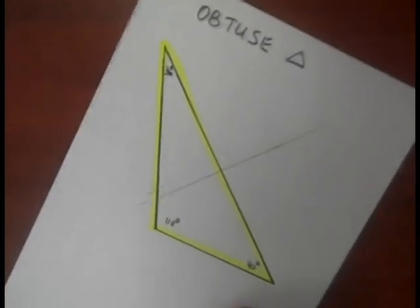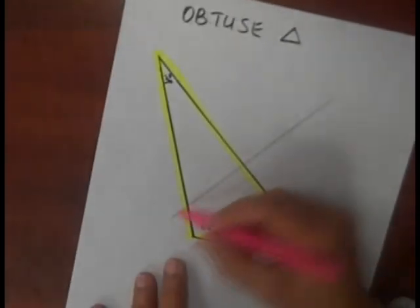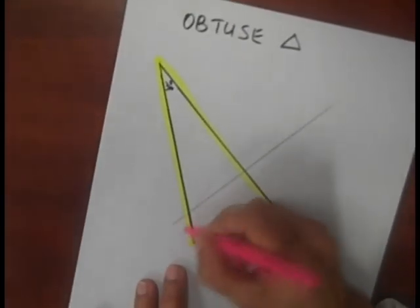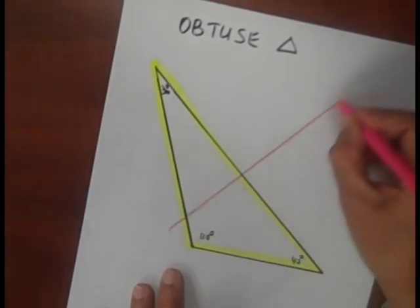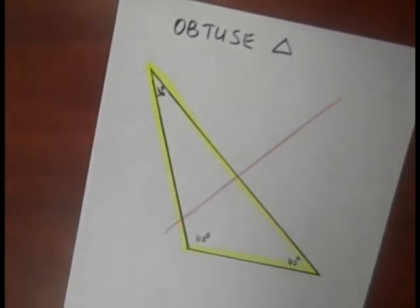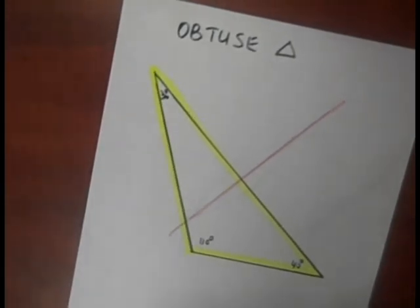And that gives me a perpendicular bisector. I'm going to highlight it. That's one perpendicular bisector for one side of the triangle. I'm going to do the same thing for the other sides.